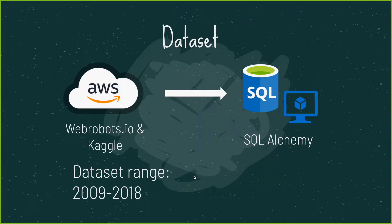The Kickstarter data is downloaded from WebRobots.io and Kaggle, uploaded into AWS and sorted using SQLAlchemy. The datasets are then combined together to encompass projects from 2009 until 2018.